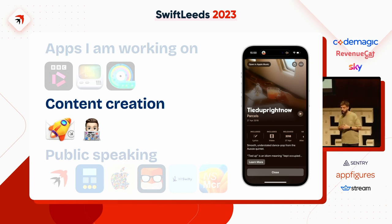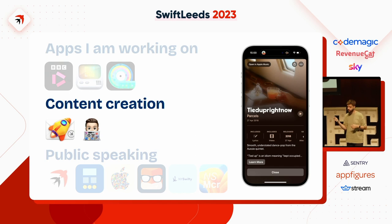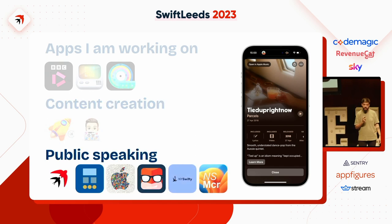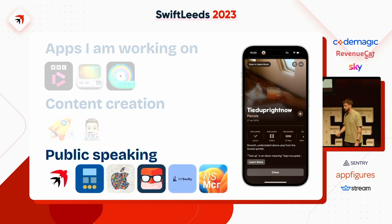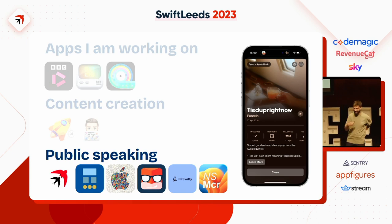I also do a lot of content creation online. I've got a newsletter called the iOS CI Newsletter, and I write weekly articles on my blog at paulpierre.dev. I do a lot of public speaking at conferences and meetups as well. And as mentioned in the introduction, I collect football shirts — I'm a massive football fan.